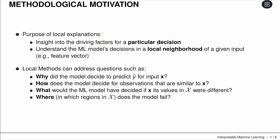With these local explanation methods, we can address questions such as: why did the model decide to predict a certain label for our input vector x? How does the model decide for observations that are similar to x? That's important for fairness — similar inputs should lead to similar predictions. What would the model have decided if x's values were different? And for debugging: in which regions of the input space does the model actually fail?